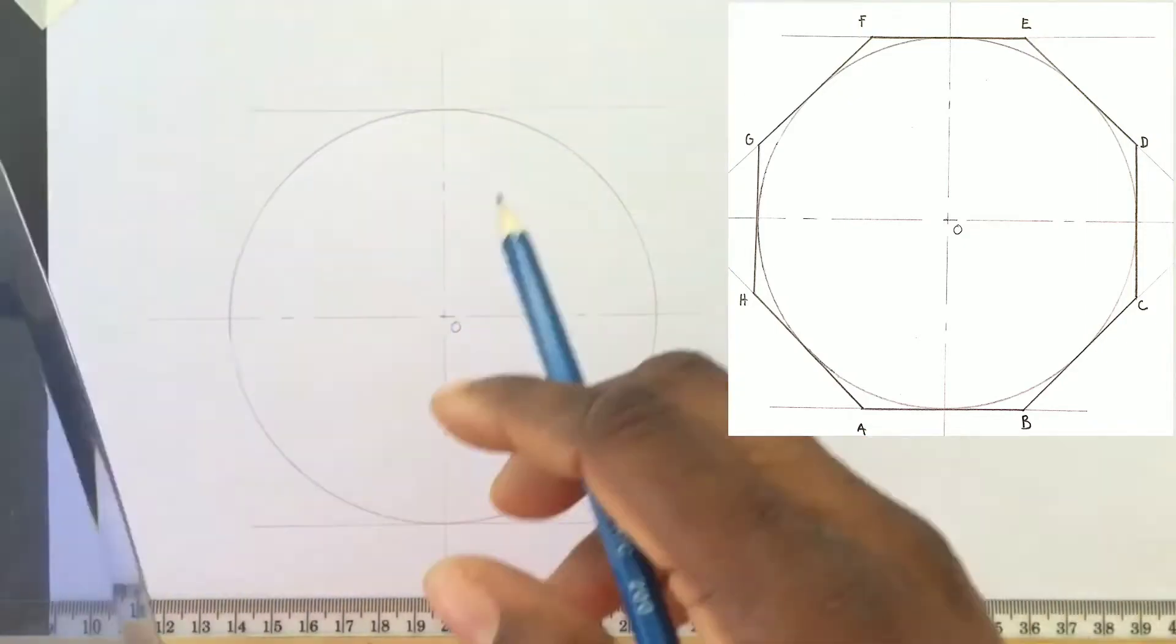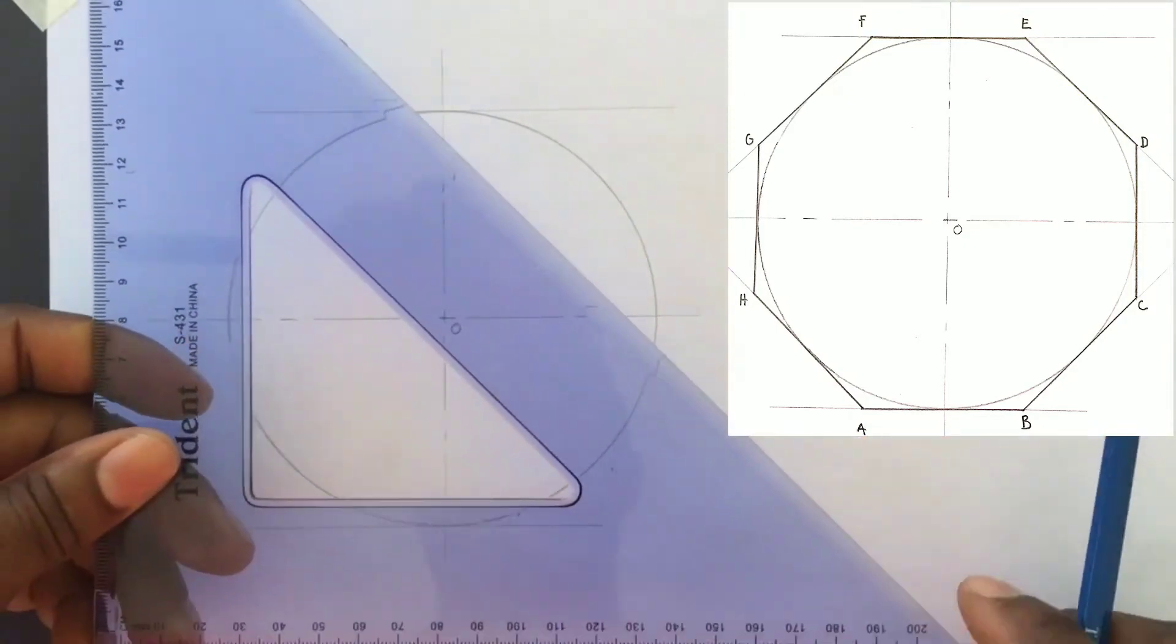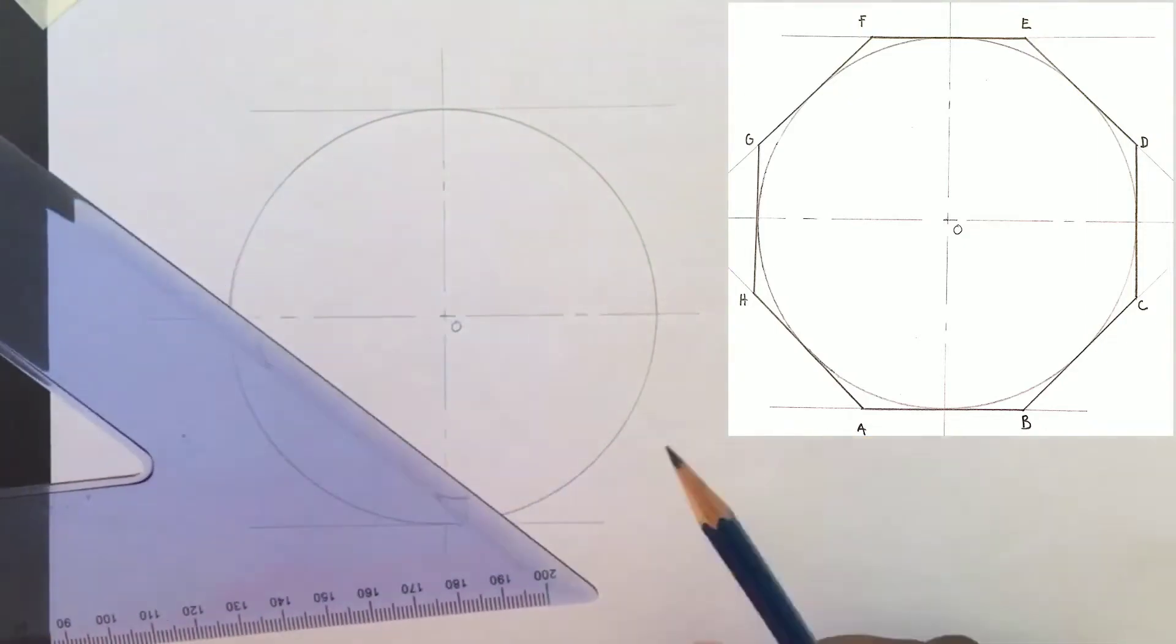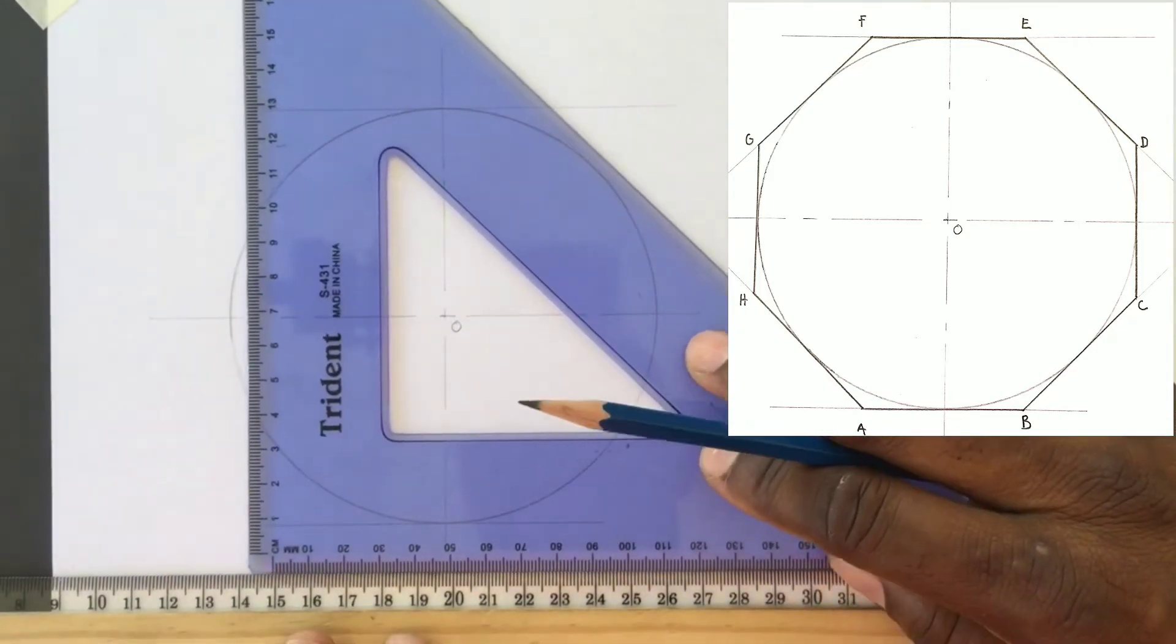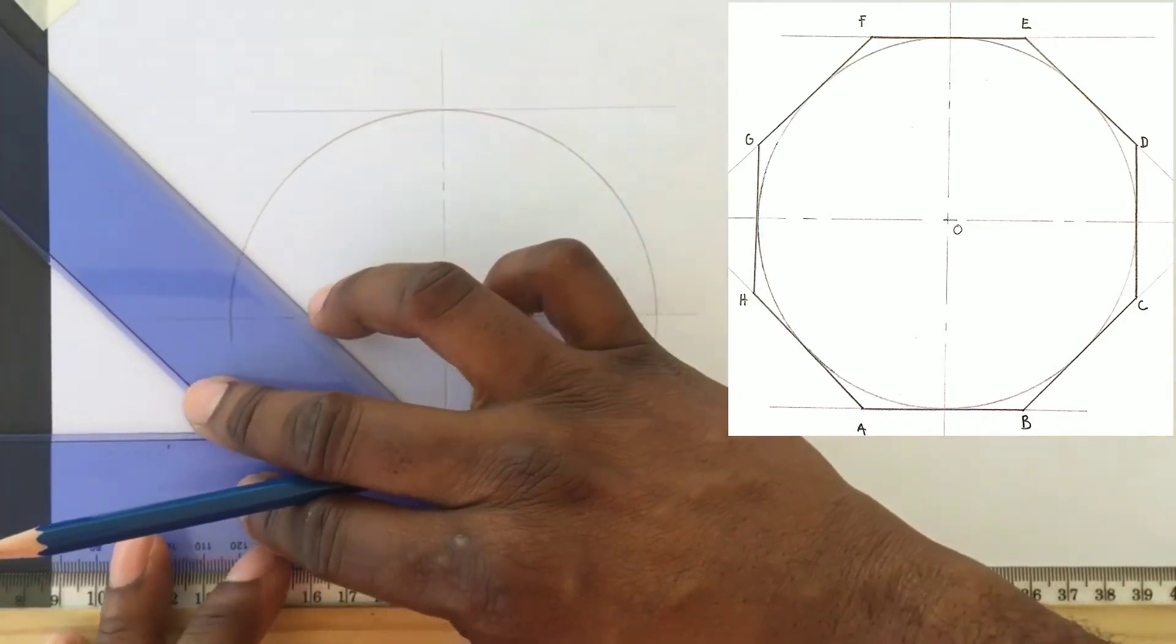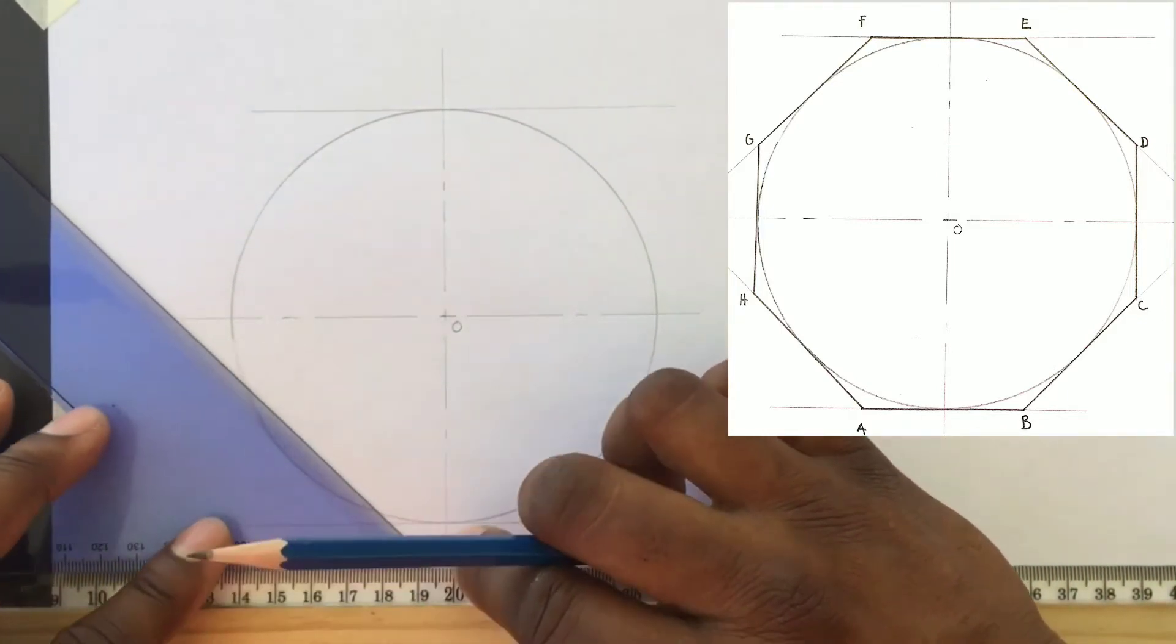We will now use our 45-degree set square to draw four tangents to our circle. These four tangents are inclined at a 45-degree angle.